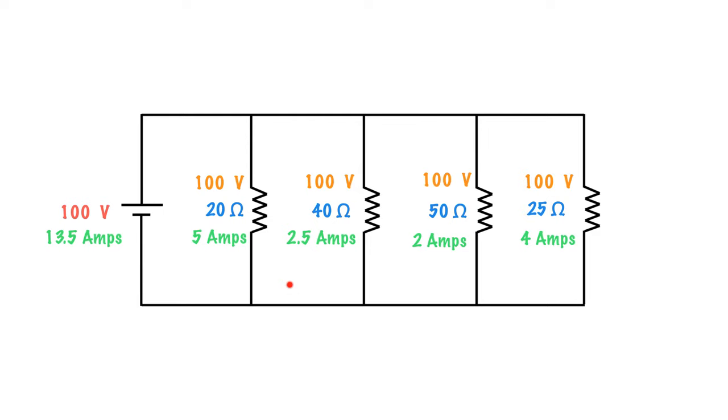This means we start out with 13.5 amps, we drop off 5 amps there, we keep going and drop off 2.5 amps, we keep going and drop off 2 amps, we keep going and drop off 4 amps, then we pick up those 2 amps, we pick up those 2.5 amps, and we pick up those 5 amps, ending up with 13.5 amps on that side.